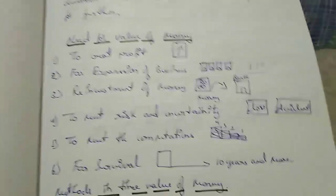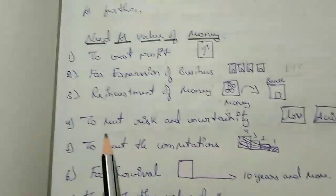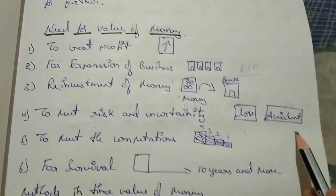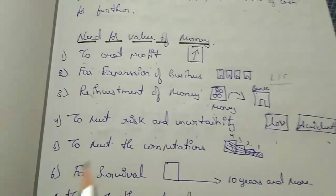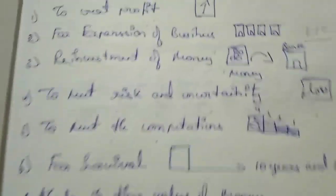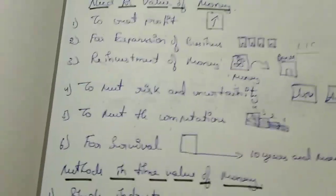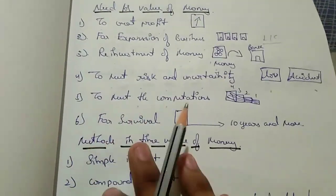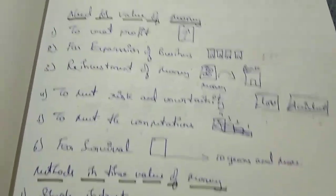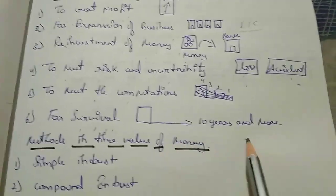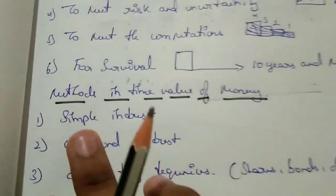To meet risk and uncertainties, as I said - life insurance, losses, accidents in business also. To meet the competitions - there are many competitors who are investing in different securities to make more profits, so here we can also invest. For survival - you will get loss, accident and all, so for survival you need something for ten more years. The invested money can be used here.